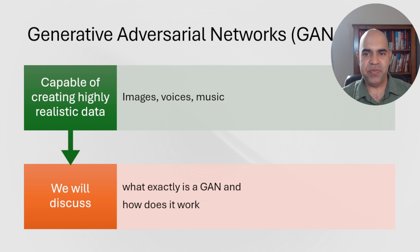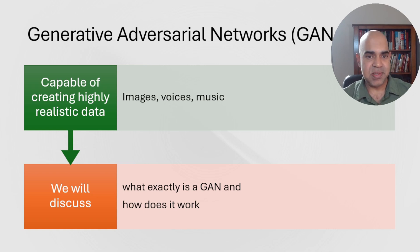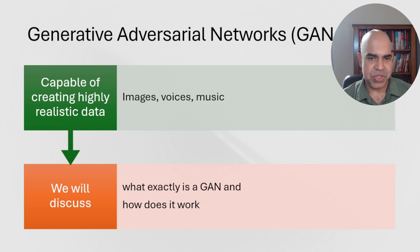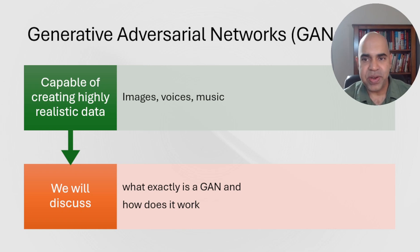In recent years, Generative Adversarial Networks, or GANs, have become one of the most exciting advancements in artificial intelligence. They are capable of creating highly realistic images, synthesizing lifelike voices, and even generating entirely new music compositions. But what exactly is a GAN and how does it work? Let's discuss the basics of GANs, how they operate, their different types, and some exciting use cases.